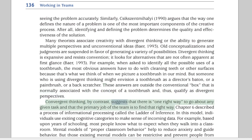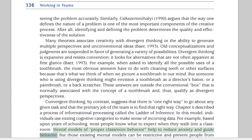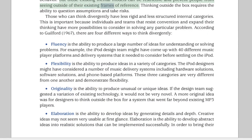Convergent thinking, by contrast, suggests that there is one right way to go about any given task, and that the primary job of the team is to find that right way. Chapter 6 described a process of informational processing called the ladder of inference, in which individuals use existing cognitive categories to make sense of incoming data. Mental models of proper classroom behavior help to reduce anxiety and guide behavior, but those existing mental models can be restrictive and prevent people from seeing outside of their existing frames of reference. Thinking outside the box requires the ability to question assumptions and take risks.